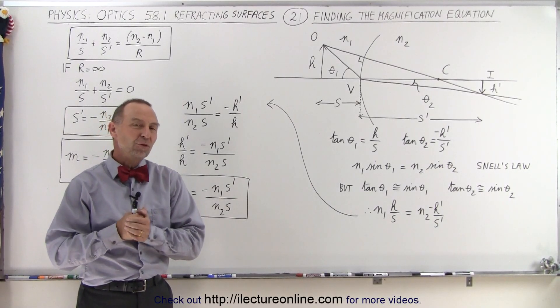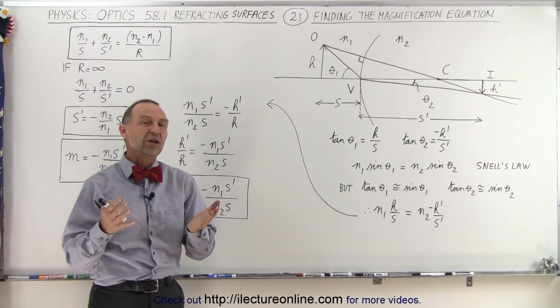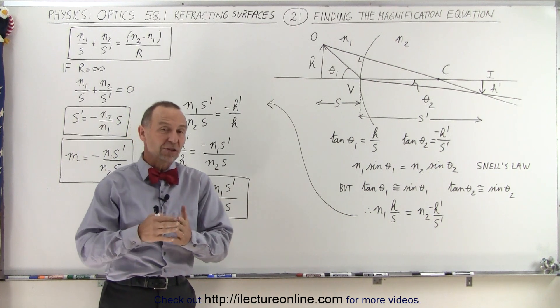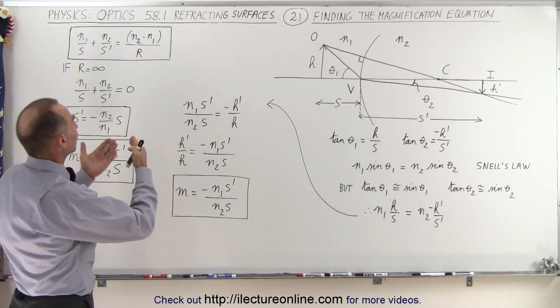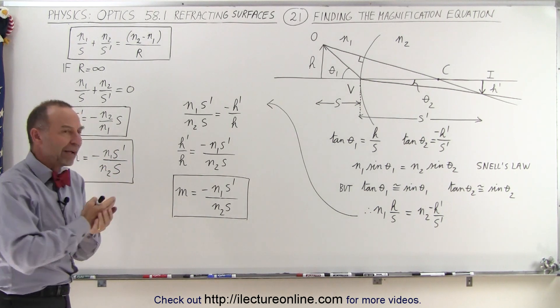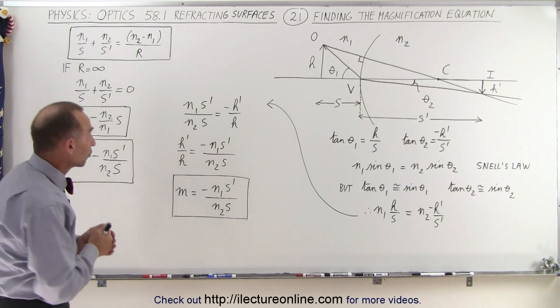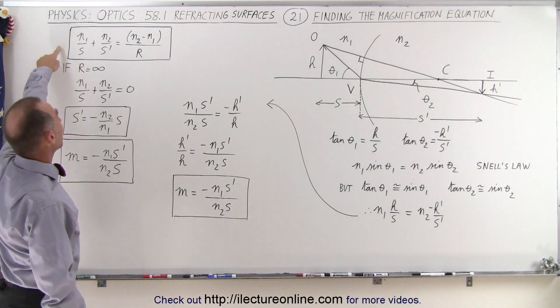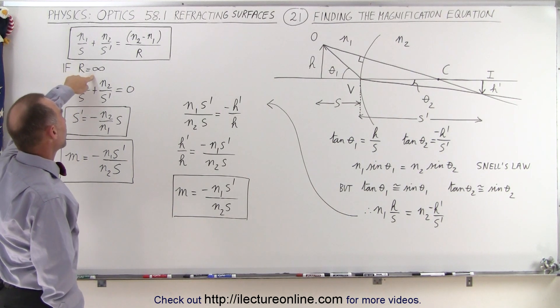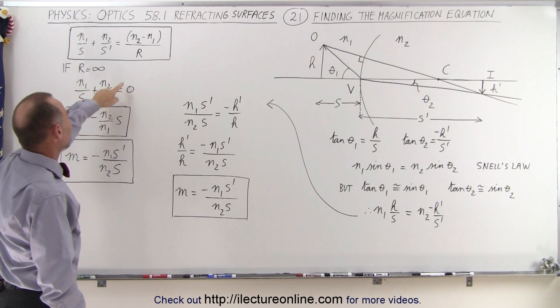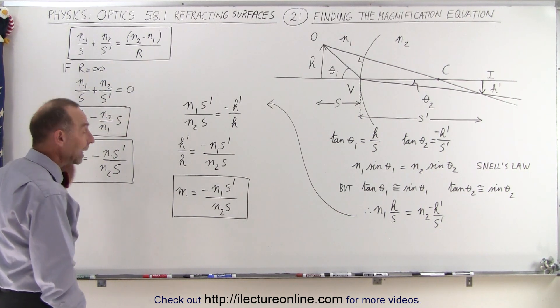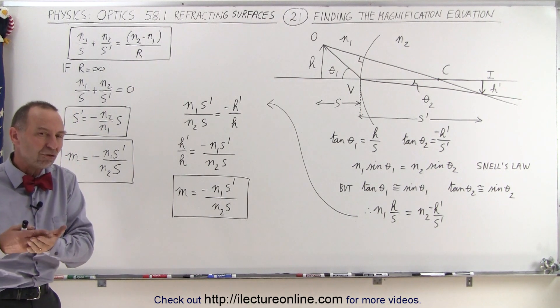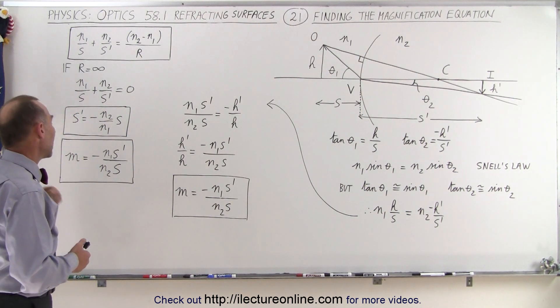Welcome to our lecture online. So far we have three equations, actually two are the same equation, and a third equation to utilize for refraction, for trying to find the images across refracting surfaces. So we have the general equation here. We have the equation when we have flat surfaces where R becomes infinite and therefore the right side becomes zero. So we have the simplified equation, and we have the equation for the magnification of the image relative to the object.